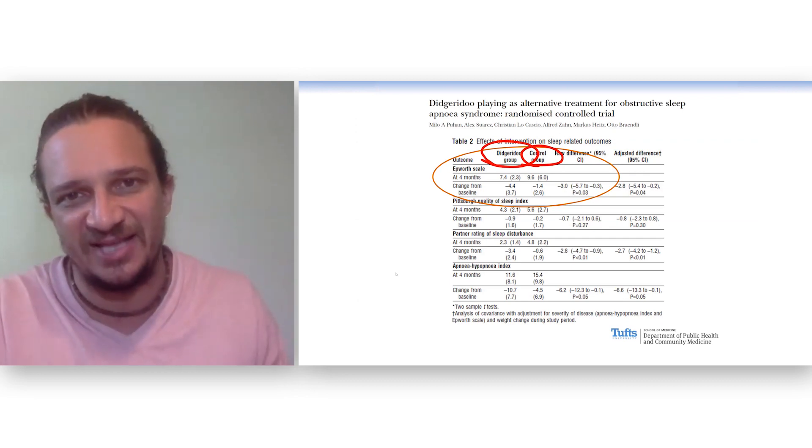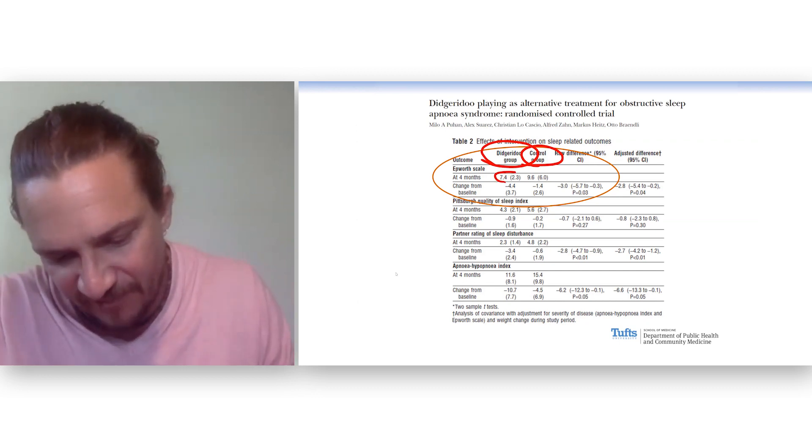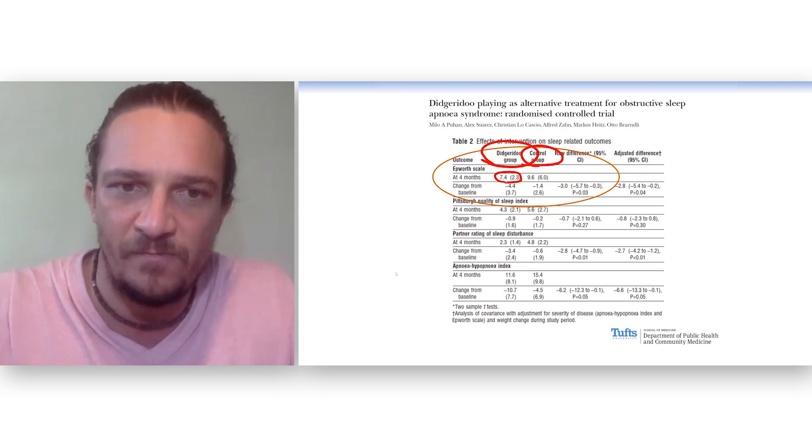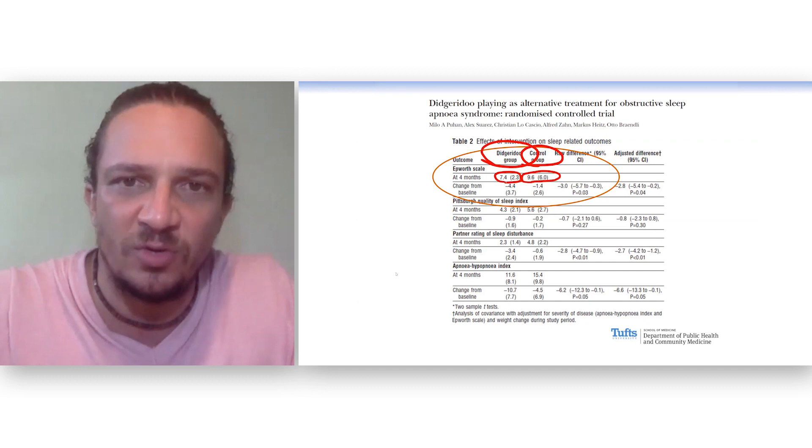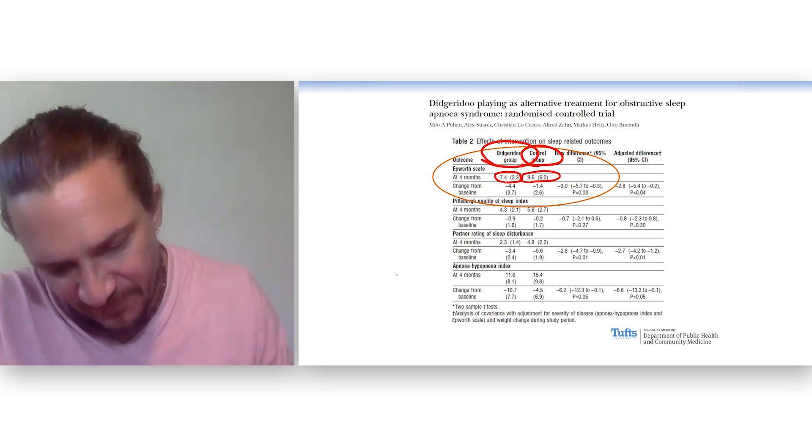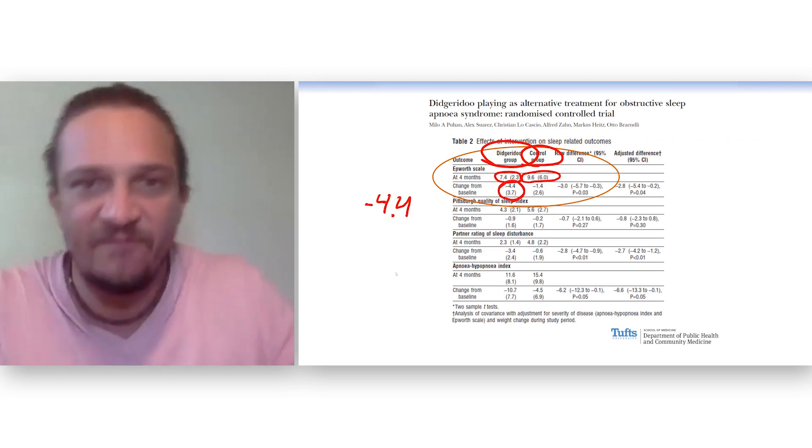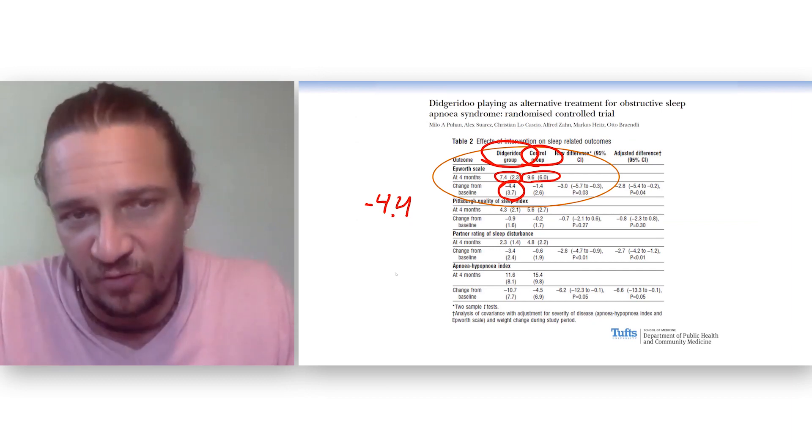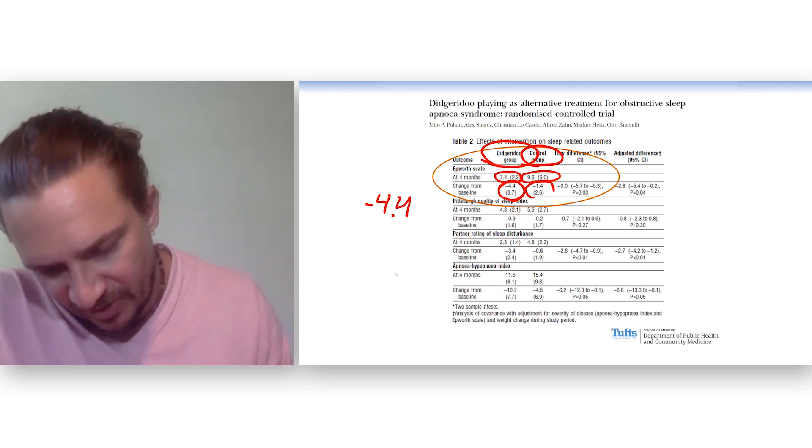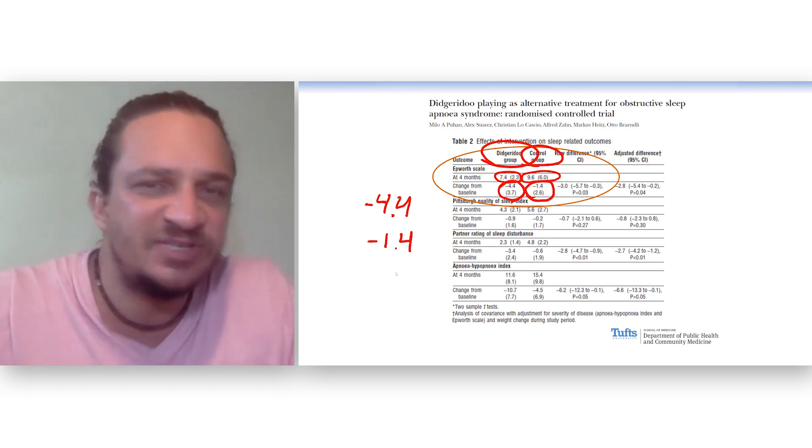Now, what we see in this study is that people who learned how to play the didgeridoo after four months had a mean Epworth score of 7.4. People in the control group had a mean Epworth score of 9.6. This changed from baseline. The didgeridoo group went down 4.4. That's how much the didgeridoo improves your sleep. The control group went down 1.4. This is important.